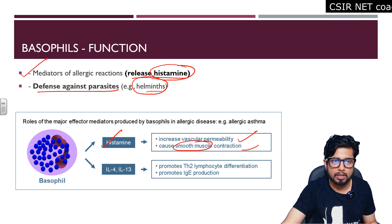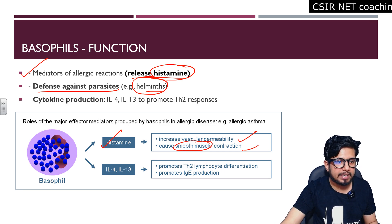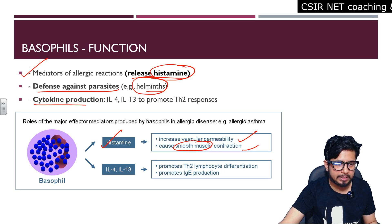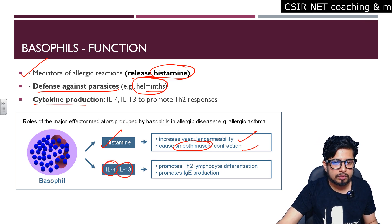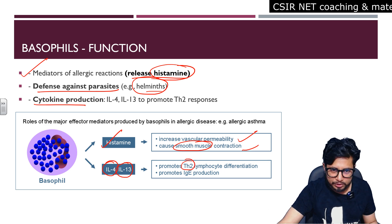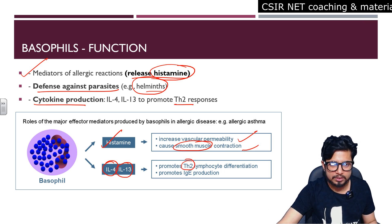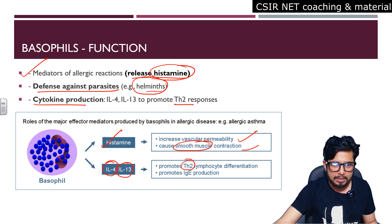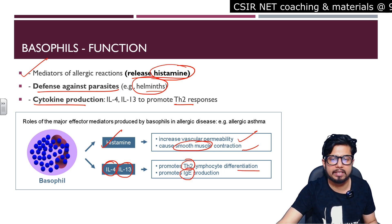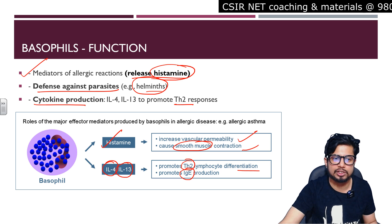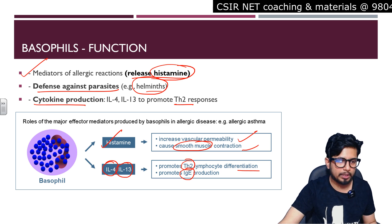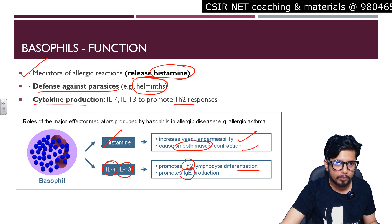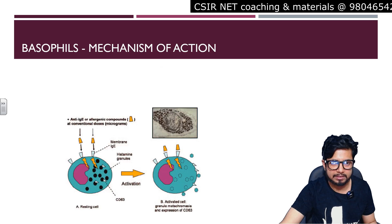Basophils also provide defense against parasites, particularly helminths or worms in the body. Additionally, they produce cytokines interleukin-4 and interleukin-13, which promote T helper 2 activation, T helper 2 lymphocyte differentiation, and further immunoglobulin E (IgE) production.